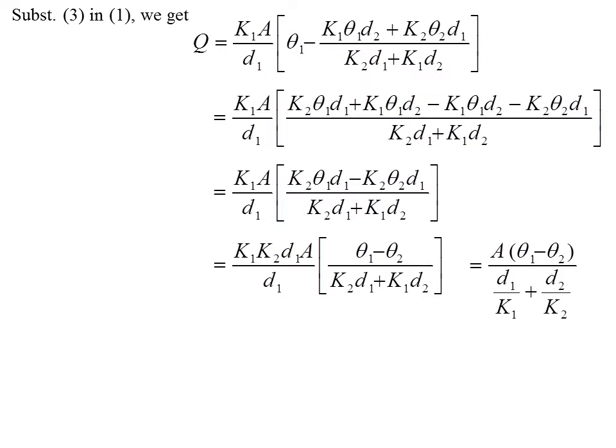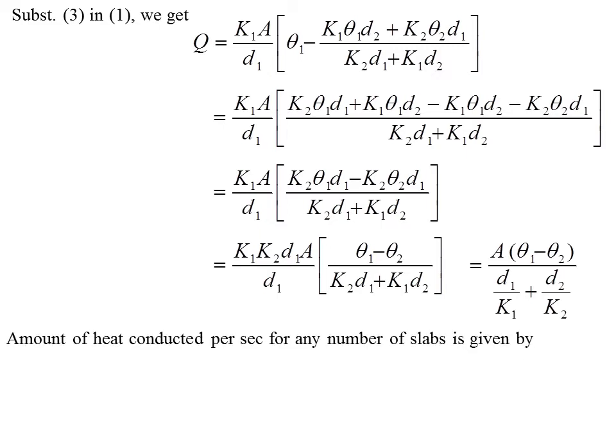With K1 and K2 in the numerator taken to the denominator by division, you get D1/K1 plus D2/K2 in the denominator. Therefore, the amount of heat conducted per second for any number of slabs is given by Q equals A times (theta 1 minus theta 2) divided by sigma(D/K), where D is the distance, A is the area of cross-section, and theta 1 and theta 2 are the temperature differences.